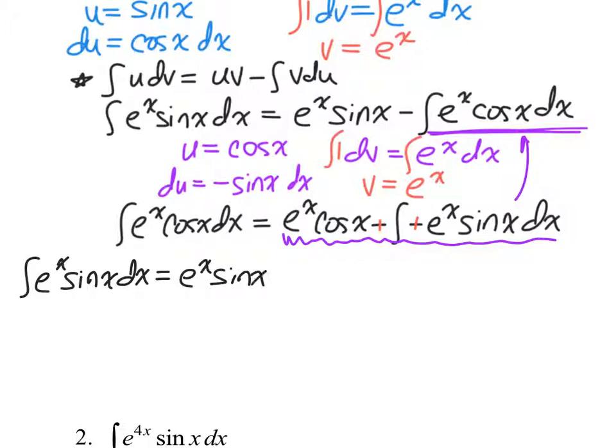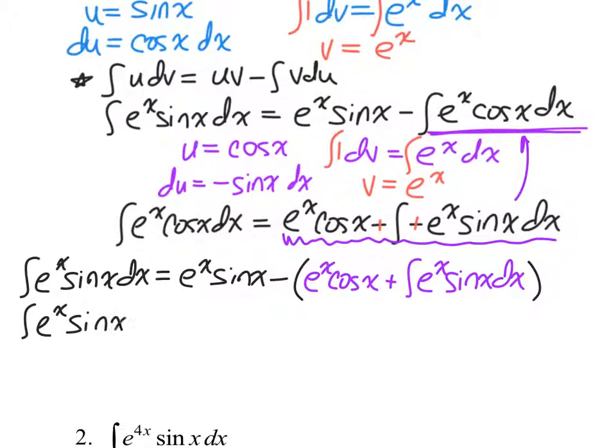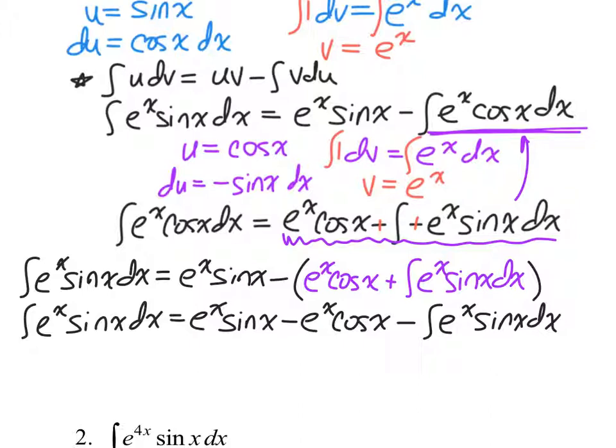Can't see more than two feet in front of me, but I hear everything. So e to the x sine of x dx is equal to the e to the x sine of x minus all of this stuff. So e to the x cosine of x plus the integral of e to the x sine of x dx. I'm going to simplify a little bit more, rewriting the whole thing again.